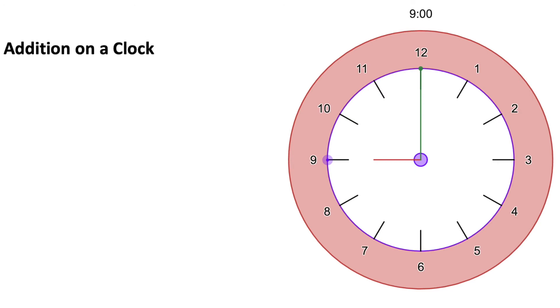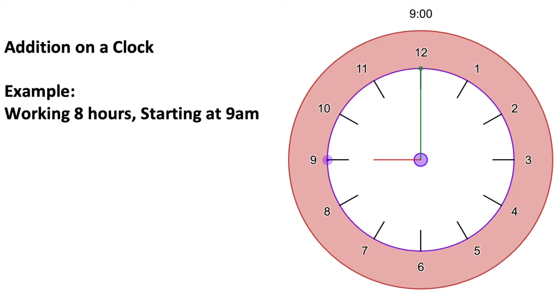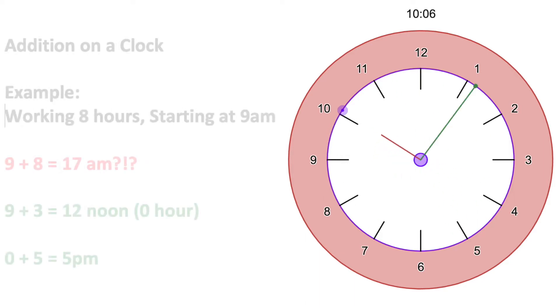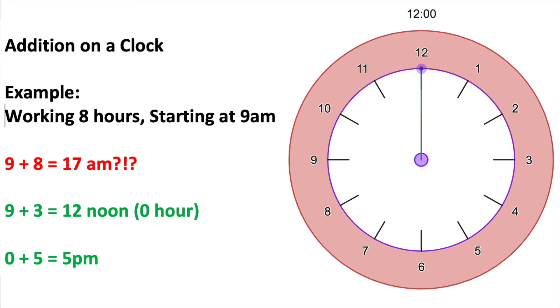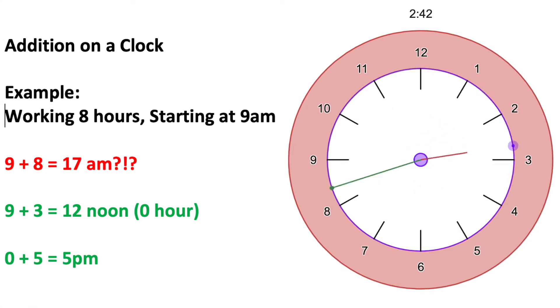Considering 12 the same as zero when we tell time also helps when adding other amounts. For example, if we start a job at 9am and we work for 8 hours, we don't get off work at 17am. What we do is add 3 hours from 9am to noon, and then reset the amount to zero before adding the other 5 hours from noon to 5pm.